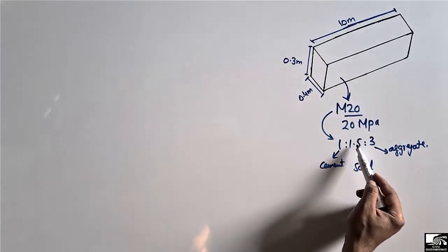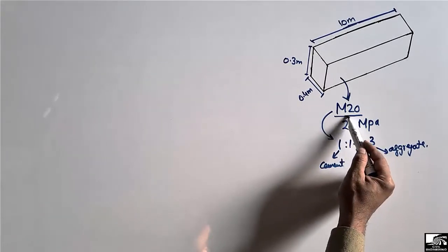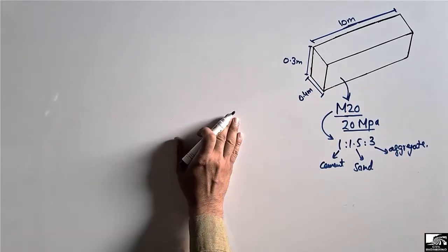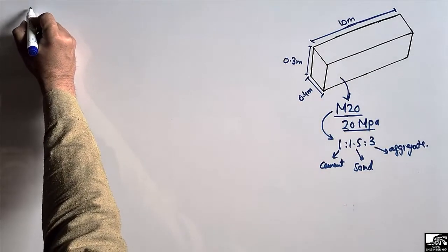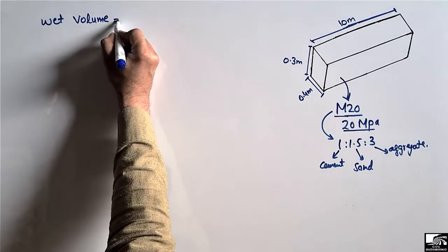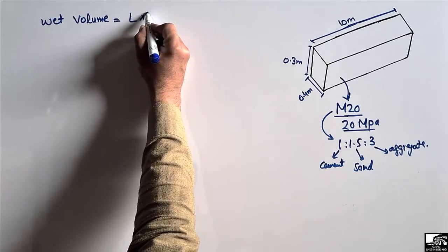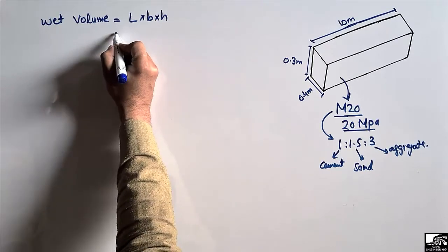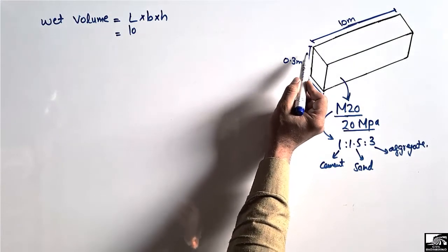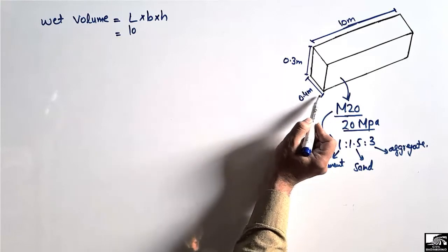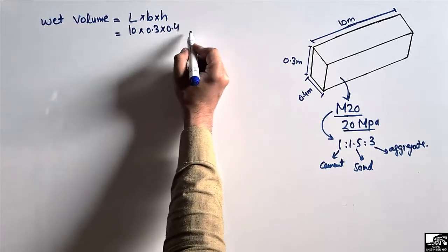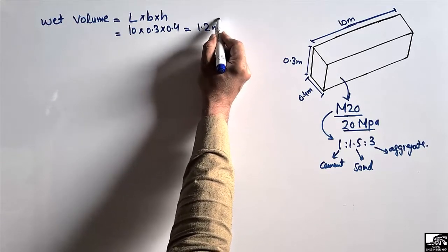M stands for mix and 20 shows the strength of the concrete in megapascals. To start finding quantities, we first find the wet volume of the beam. Wet volume equals length × breadth × height. The length is 10 meters, the height is 0.3 meters, and the breadth is 0.4 meters, giving a total wet volume of 1.2 cubic meters.